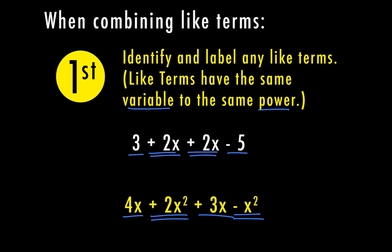You have to understand that first you want to identify your terms, and whenever you separate your terms, you want to keep the sign in front of the number or variable. So in this case we have a positive 4x, a positive 2x squared, a positive 3x, and a negative x squared. If you look at our first example, we had a positive 3, a positive 2x, another positive 2x, and a negative 5. And that's going to be important for the next step where we actually combine these together.